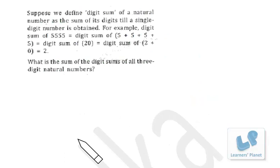For example, the digit sum of 55555 is 5+5+5+5+5 = 20, and then 2+0 = 2. So finally it is 2. Basically, we can define this as the digital root. What is the sum of the digit sums of all three-digit natural numbers?